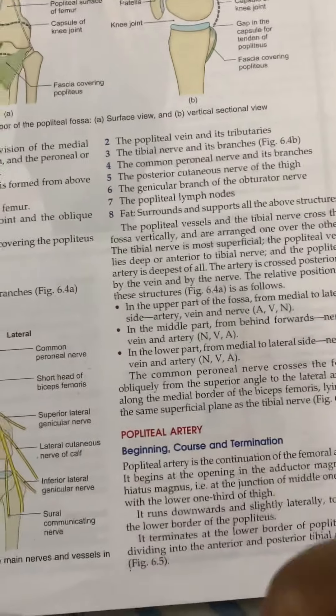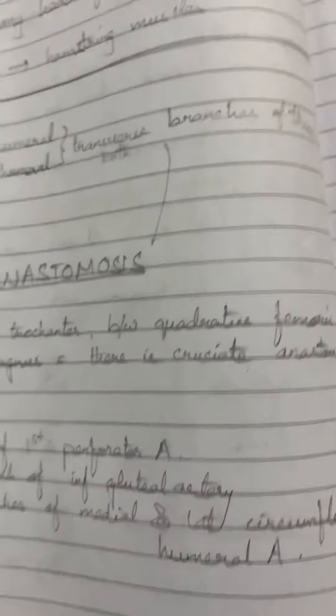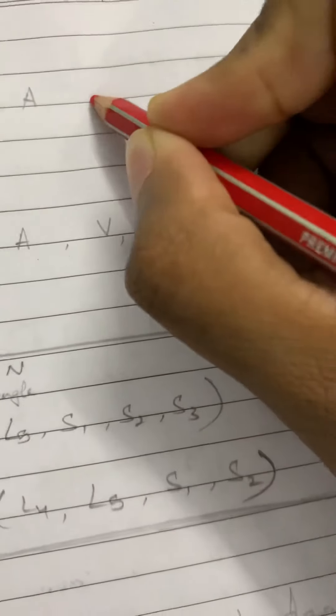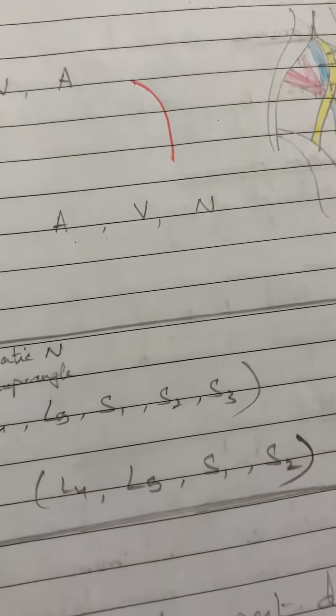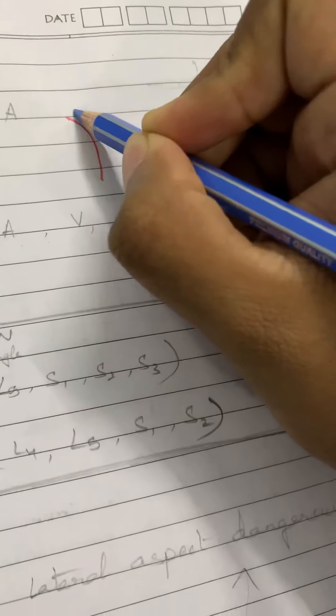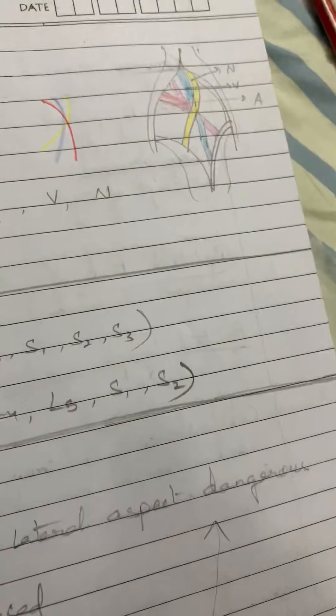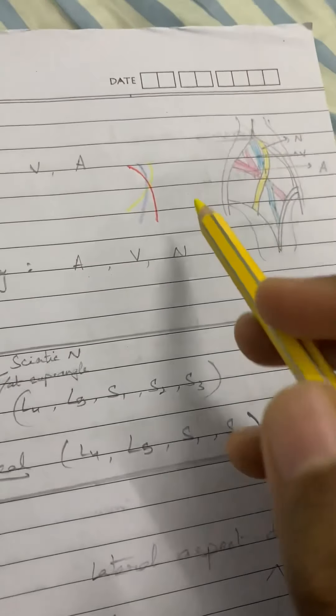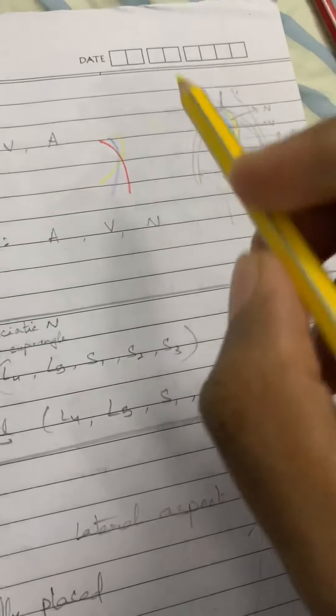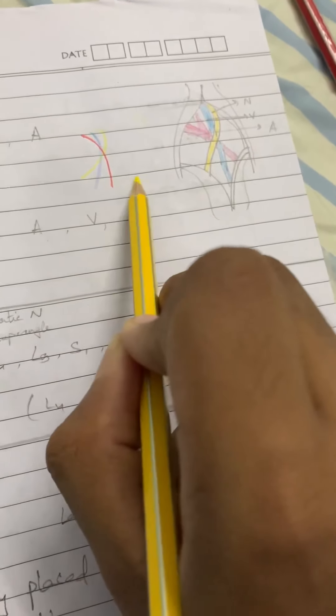Before we get on to the popliteal artery, it is important to understand one diagram that will make things easy. In the upper part of the popliteal fossa, from medial to lateral, the order is: popliteal artery, popliteal vein, and popliteal nerve. From posterior to anterior, the order is: nerve, vein, then artery.